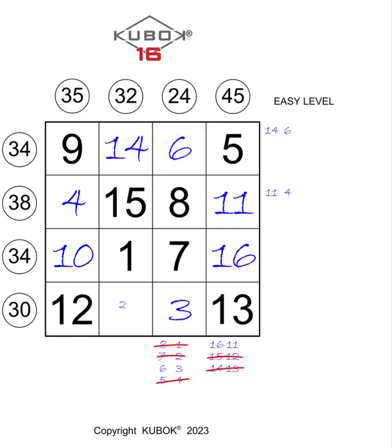At this point it is easy to find the position of the last missing number placed at the intersection between the second column and the fourth line. Therefore we will write the number 2 in the empty box. In addition, the number 2 is also the only number between 1 and 16 still missing.